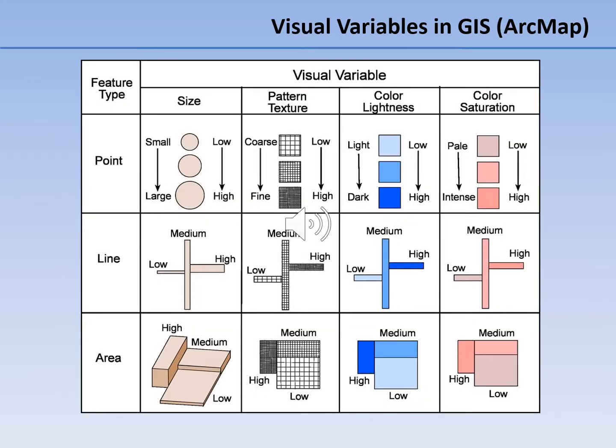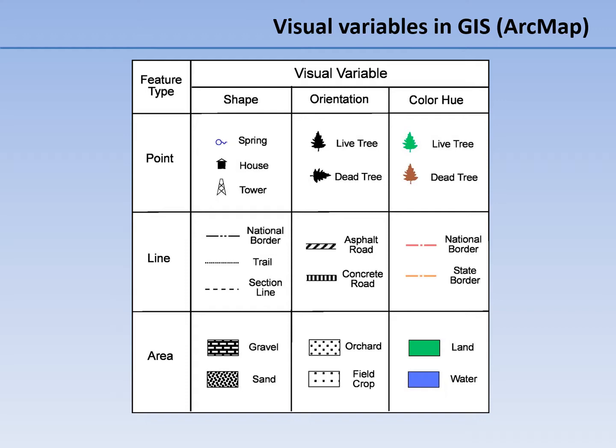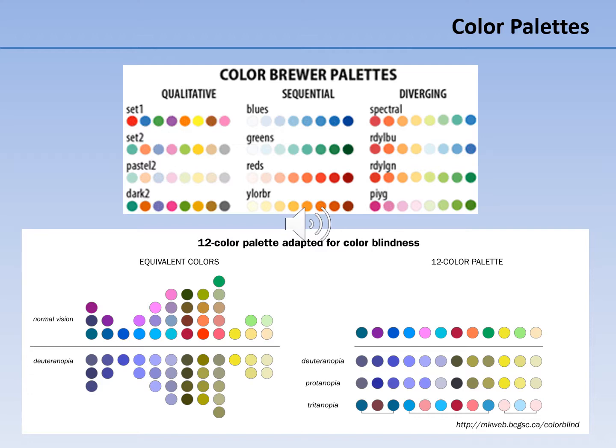The next two slides show visual variables in geographic information systems such as ArcMap. Brewer palettes are color combinations selected for their special properties for use in data visualization and information design. There are three types of Brewer palettes: qualitative palettes, where the colors do not have a perceived order; sequential palettes, where the perceived order and perceived difference between successive colors is uniform; and diverging palettes, where two back-to-back sequential palettes start with a common color.